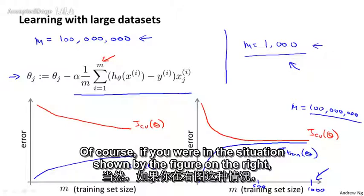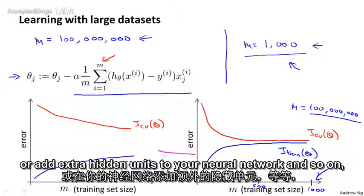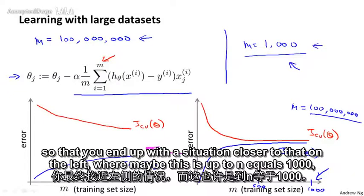Of course, if you were in the situation shown by the figure on the right, then one natural thing to do would be to add extra features or add extra hidden units to your neural network and so on, so that you end up in a situation closer to that on the left,